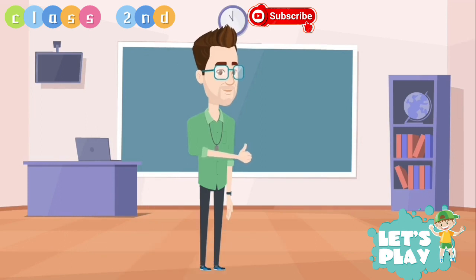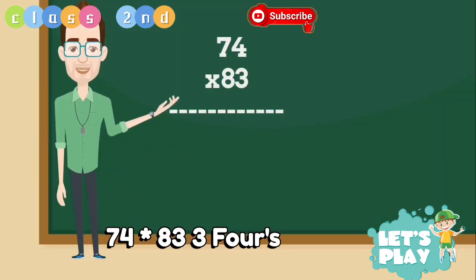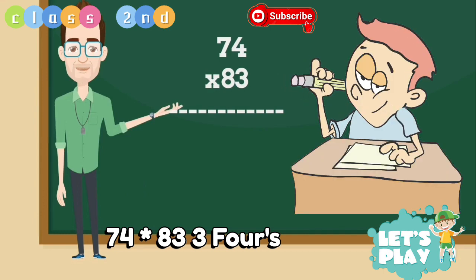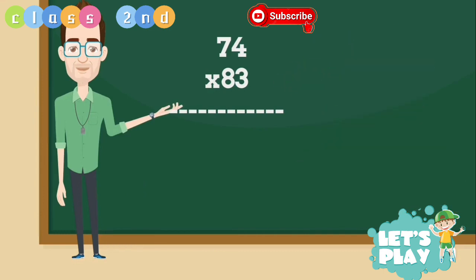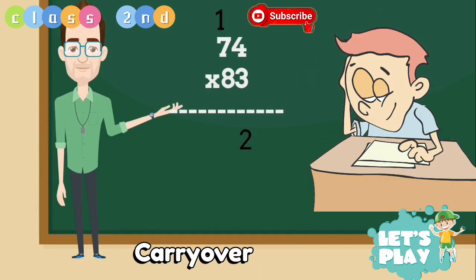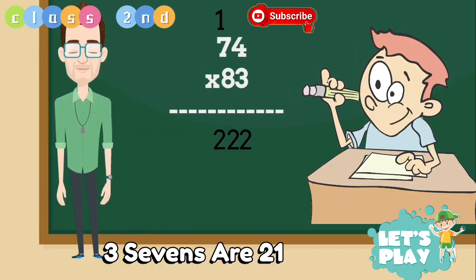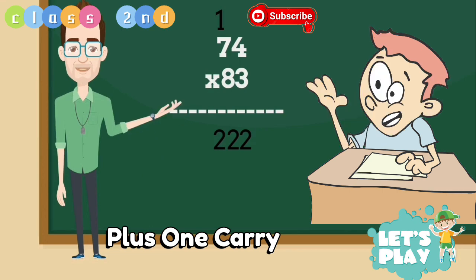Are you ready? Ok, so this is the first one, 74 multiplied by 83. 3 4's are 12. We write 2 down and 1 as carry over. Now 3 7's are 21 plus 1 carry over, 22.